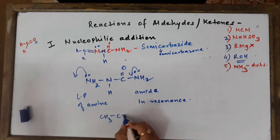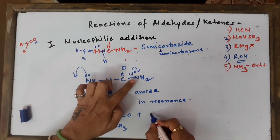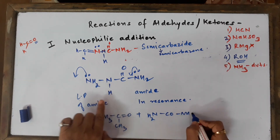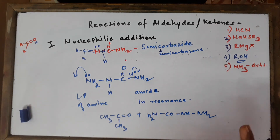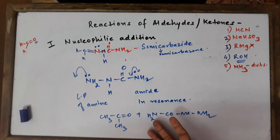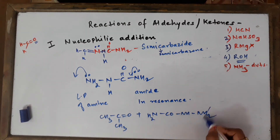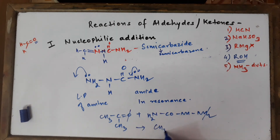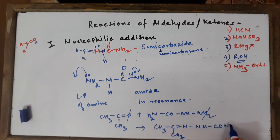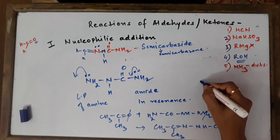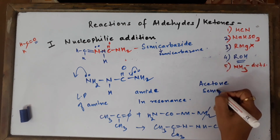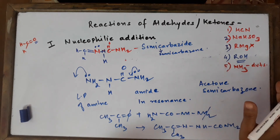For example, if you have CH3-CO-CH3 (acetone) reacting with semicarbazide NH2-NH-CO-NH2, be very particular: do not attack from the amide side. Attack from the amine side. Knock out the two hydrogens from the amine NH2 and the oxygen from the carbonyl, and the final answer is CH3-C(=N-NH-CO-NH2)-CH3. This is acetone semicarbazone - or propanone semicarbazone - because semicarbazide has become semicarbazone.